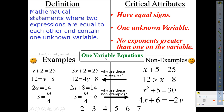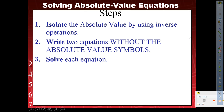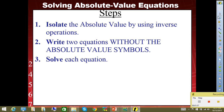We already know what one variable equations are, and we know our steps. So I do need you to copy these next steps. Three steps: before we get to simplify, isolate, plot, and check — first, isolate the absolute value by itself using inverse operations. Step two, write two equations without absolute value symbols. Then solve each equation to get a solution.